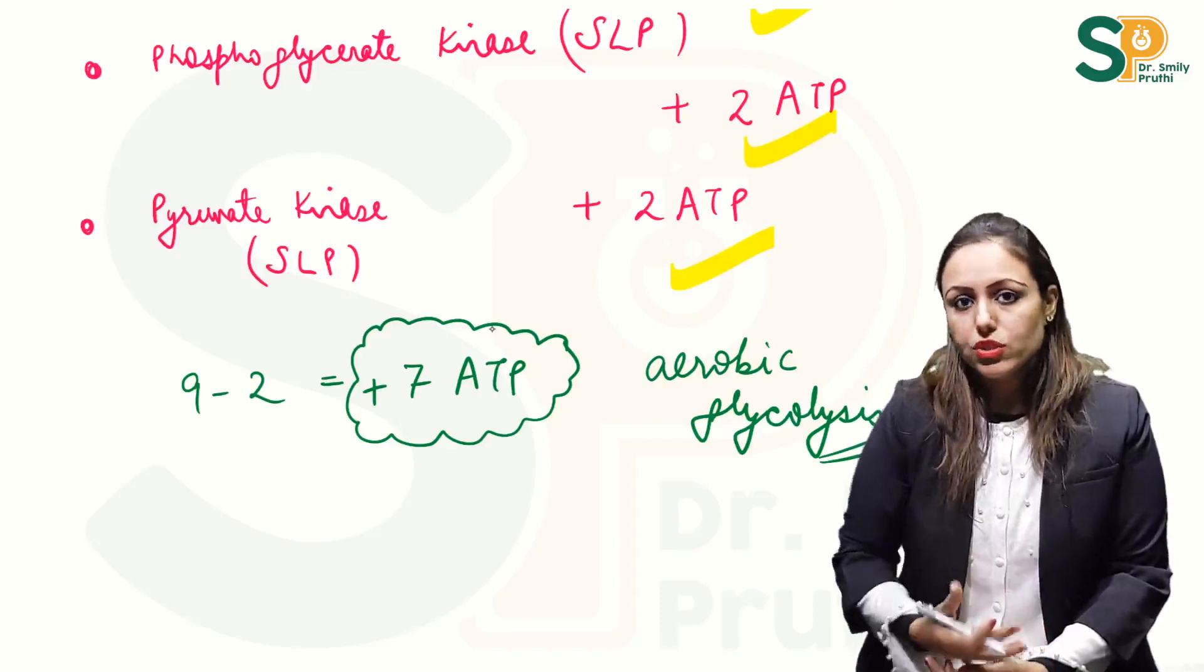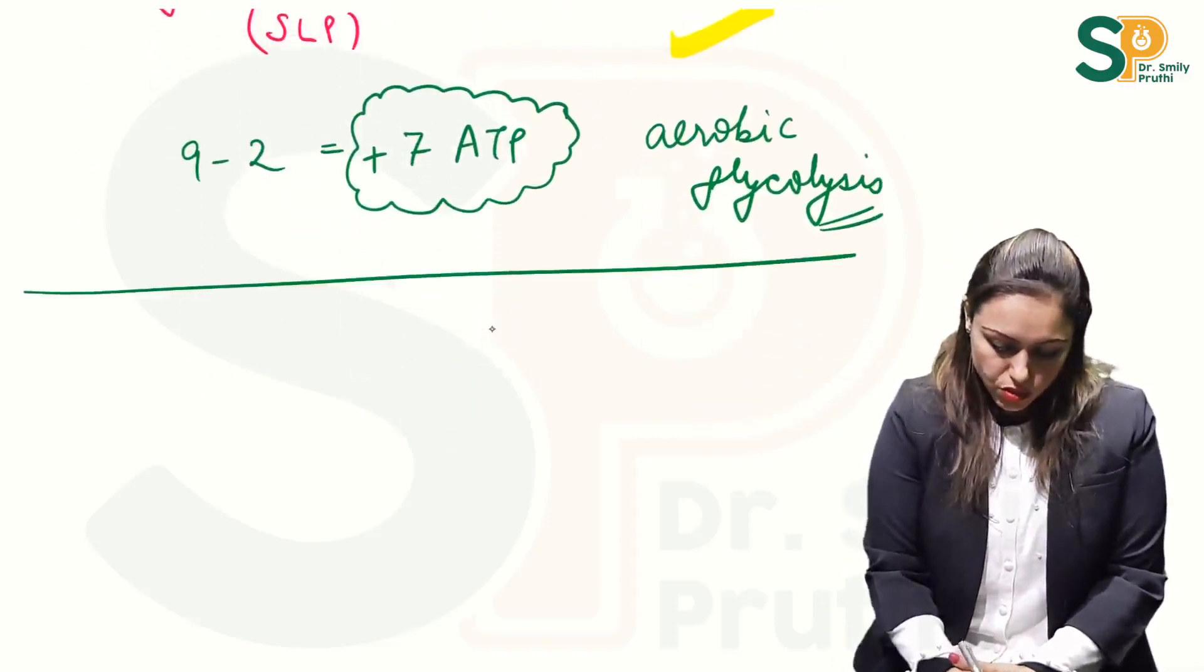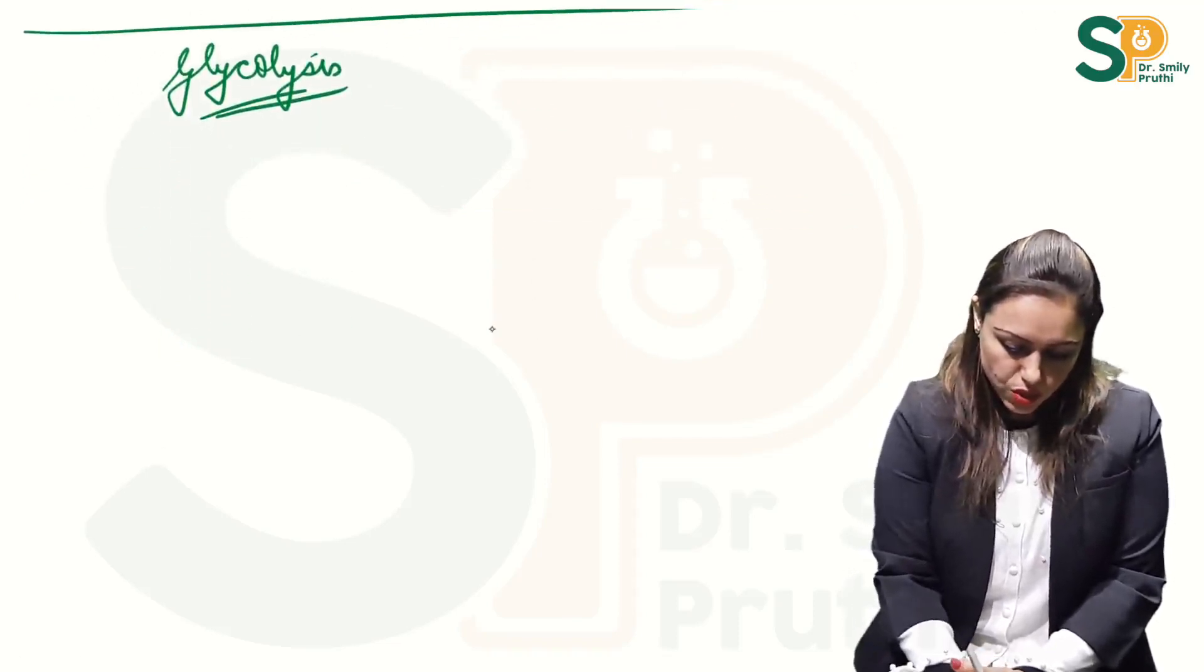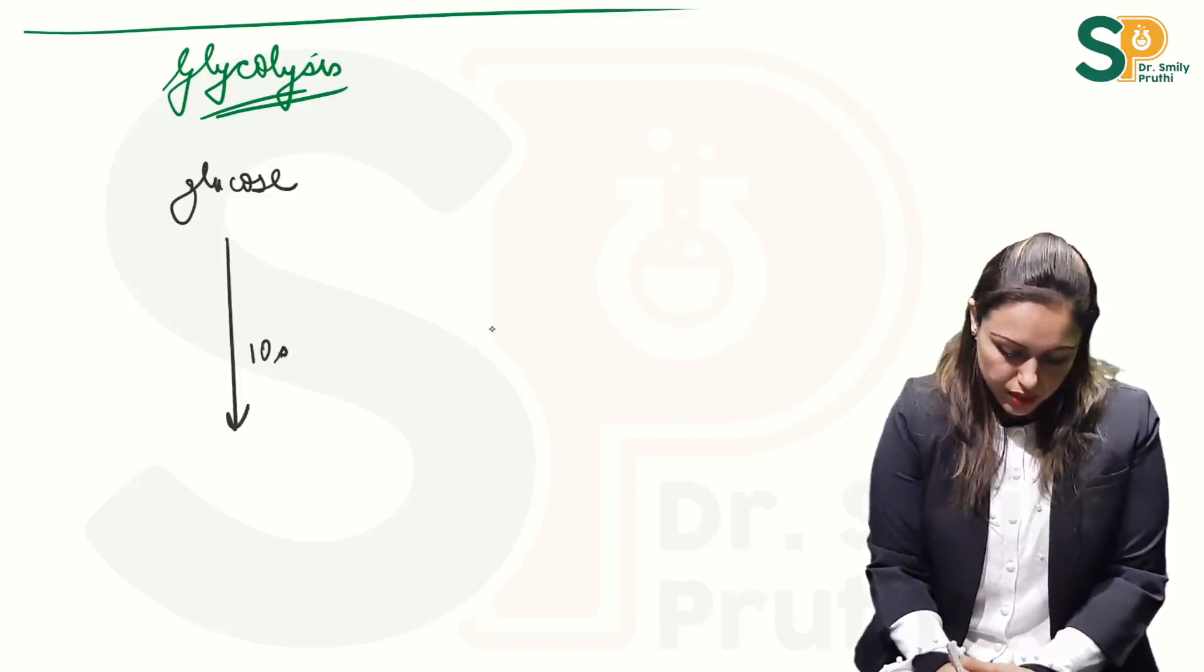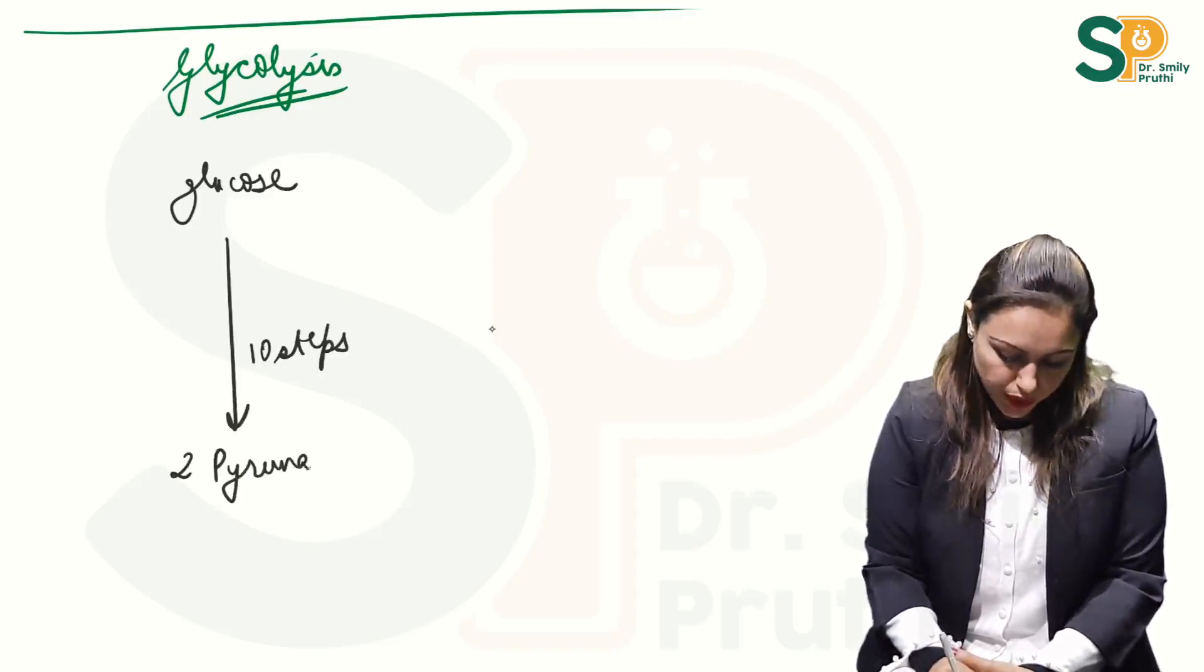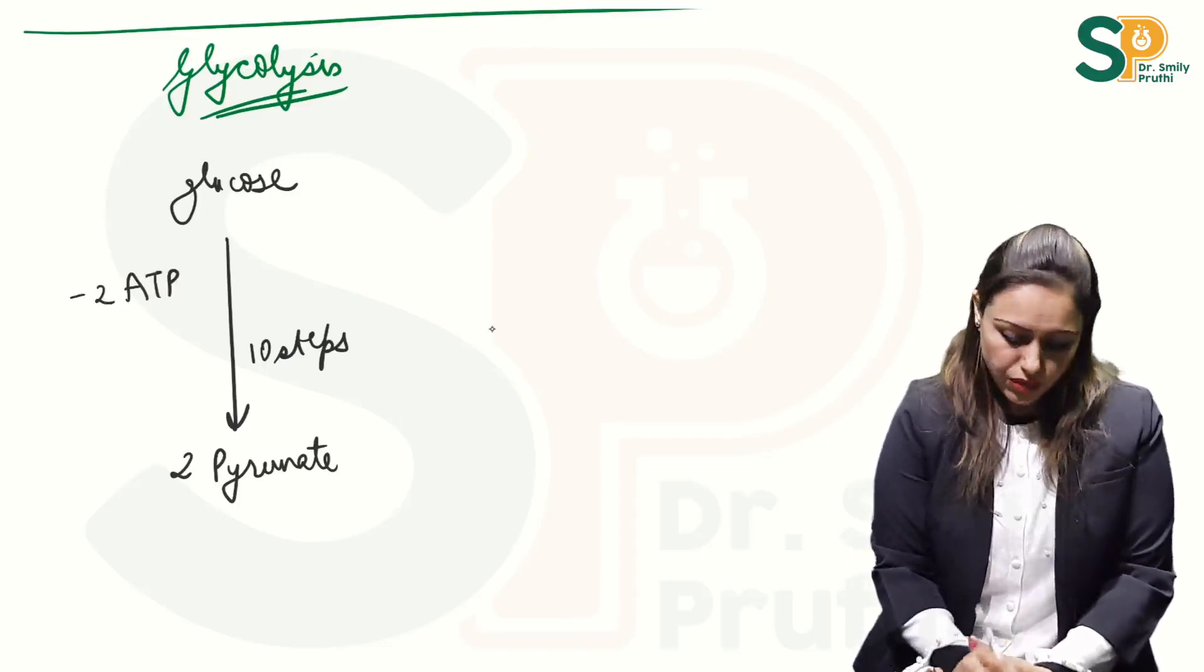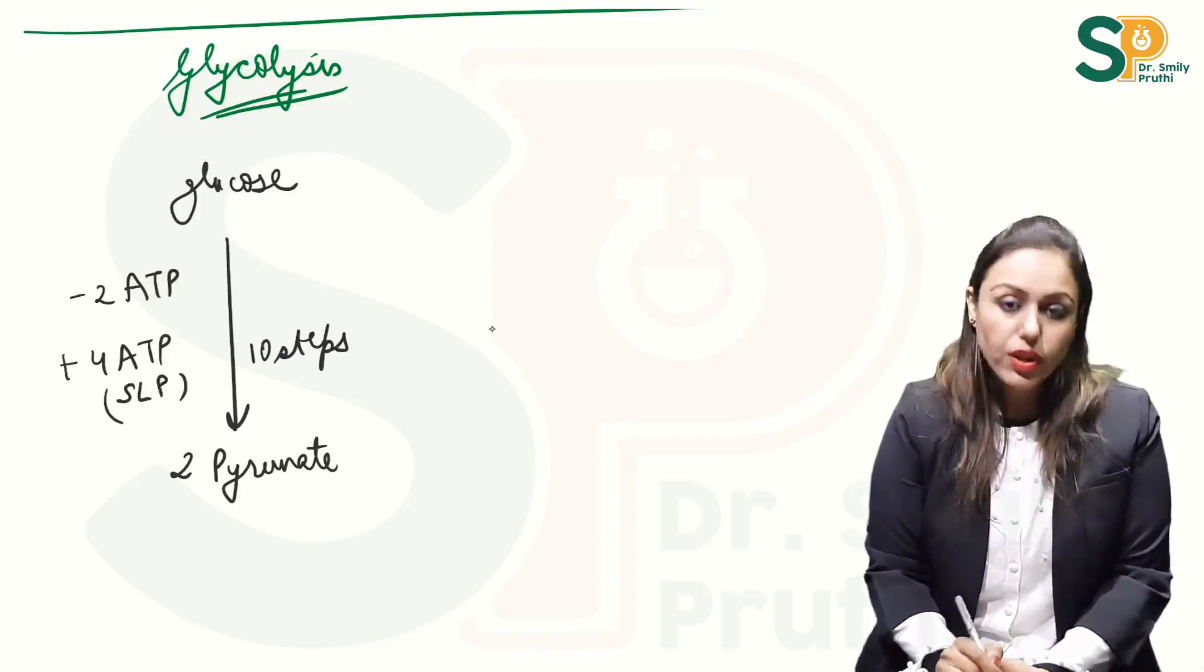So let's also talk about anaerobic glycolysis. In short if I write energetics of glycolysis then I will write it this way that one molecule of glucose via 10 steps gets converted to 2 molecules of pyruvate in aerobic glycolysis. Here minus 2 ATPs we have done in phase one, plus 4 ATPs via substrate level phosphorylation we have got.